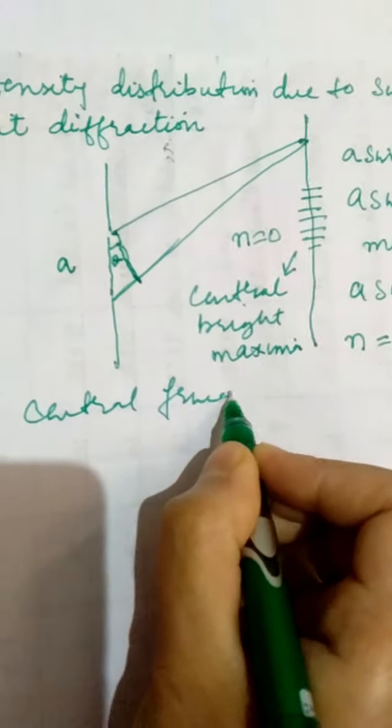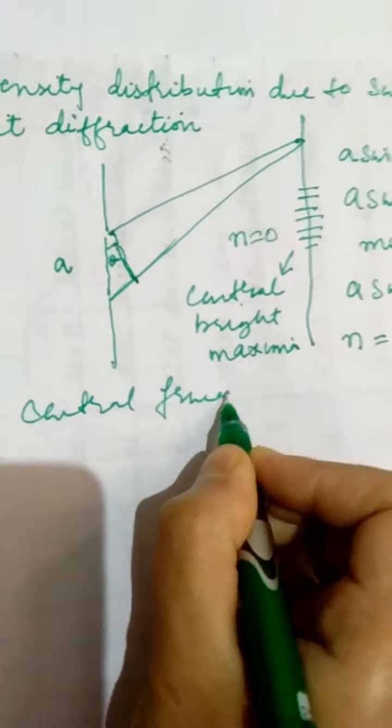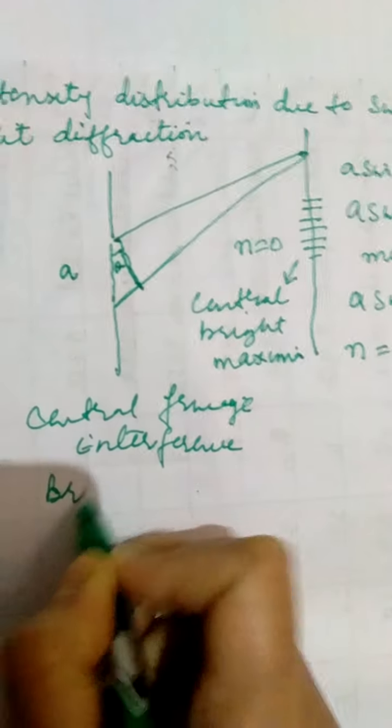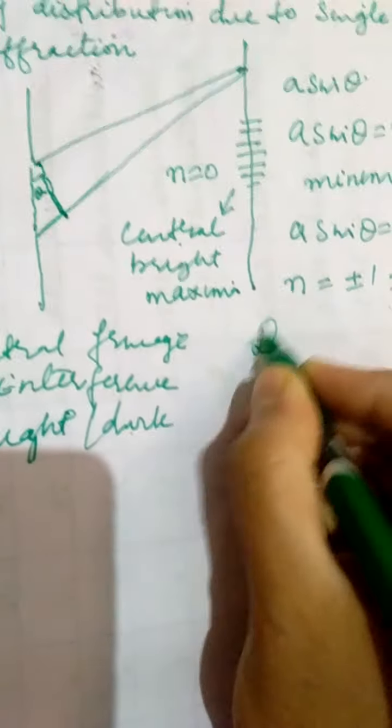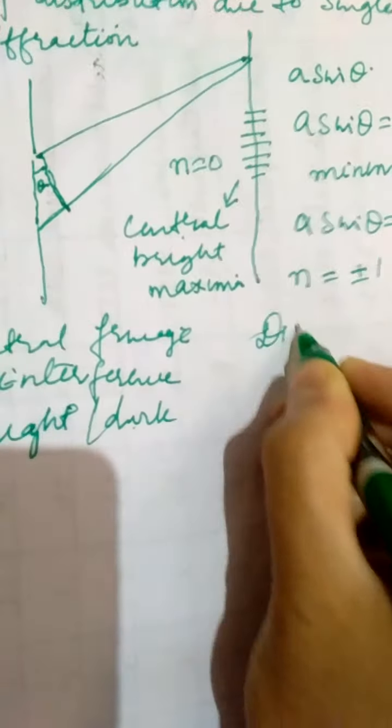One more difference between interference and diffraction is that the central fringe in case of interference can be bright or dark — it depends on the path difference. But in case of diffraction, the central fringe is always bright.